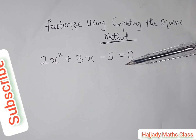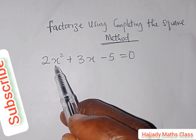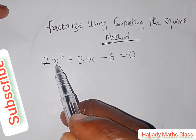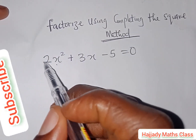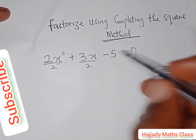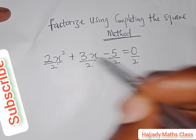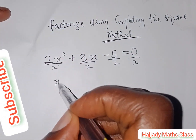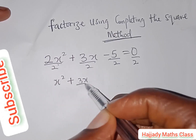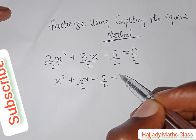The first approach is to divide through by the coefficient of x², which is 2. Dividing every term by 2, we get x² + 3x/2 - 5/2 = 0.